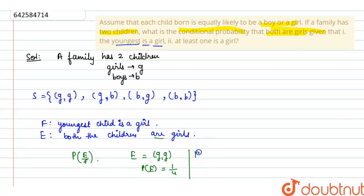Now for F, youngest child is girl means in this four cases, the second, meaning smallest or youngest, should be girl.